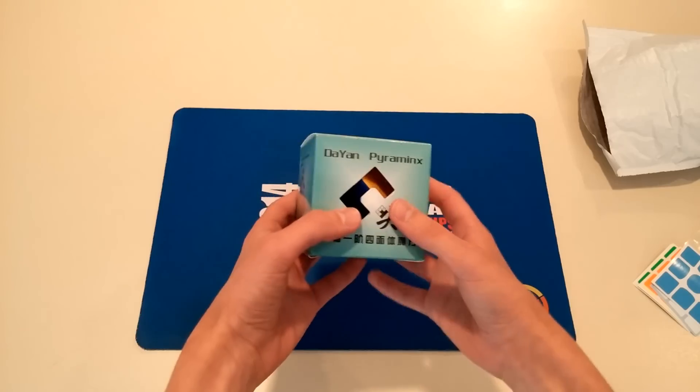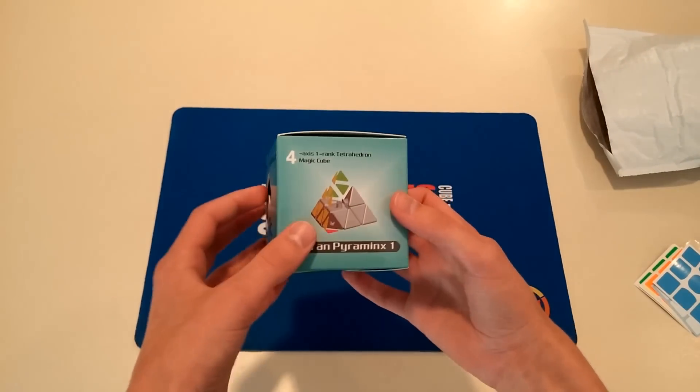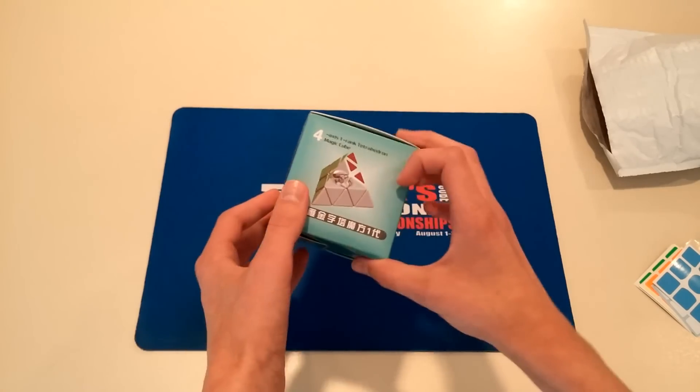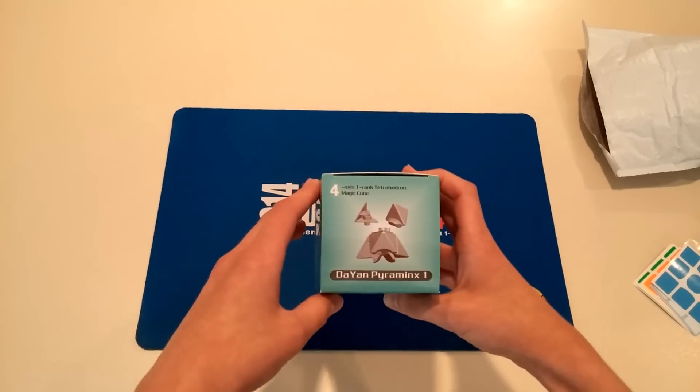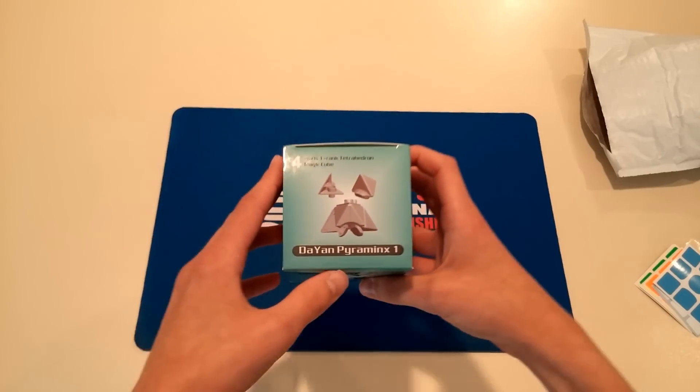And this is the Dian Pyraminx, and I got it in stickerless, as you can maybe see through there. It says Dian Pyraminx 1. That's kind of cool, maybe they'll make more. Not really anything interesting on the box. 4-axis 1-rank tetrahedron magic cube.